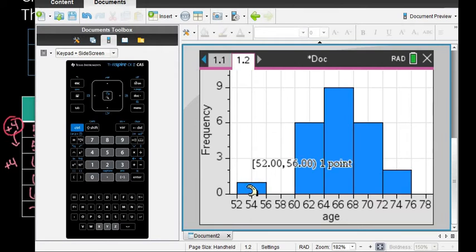From 52 to below 56—they use interval notation that doesn't include 56—there was one value. There aren't any between 56 and below 60. From 60 to below 64 there was 6, then 9, 6, and 2.